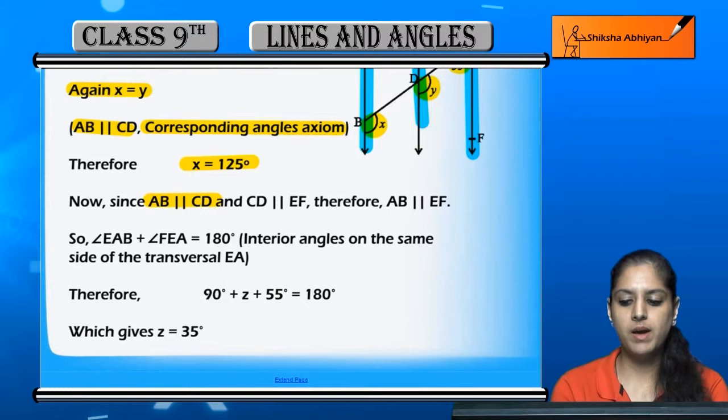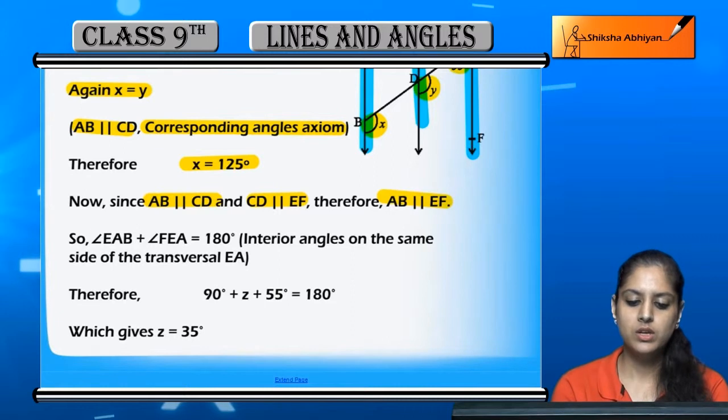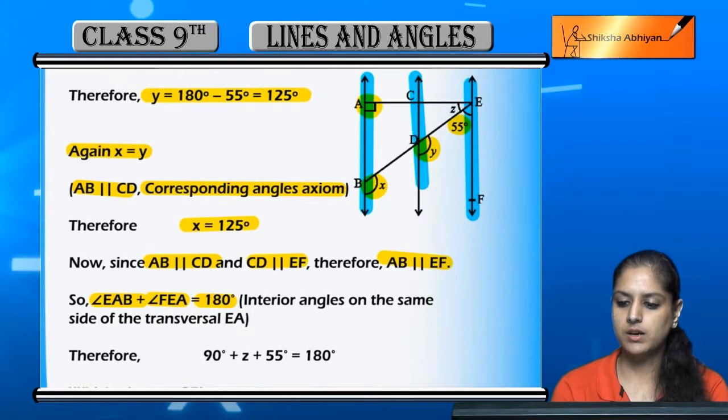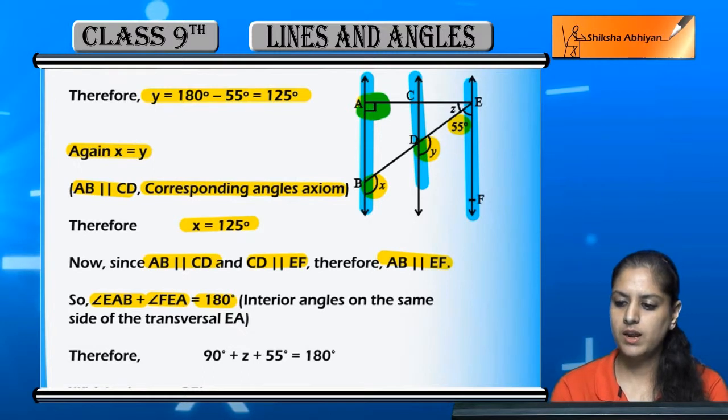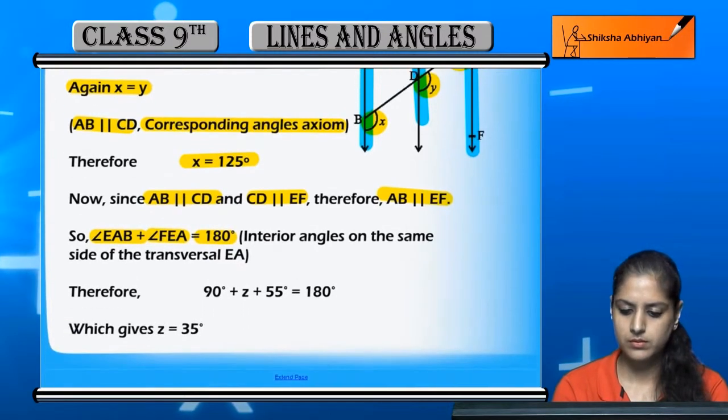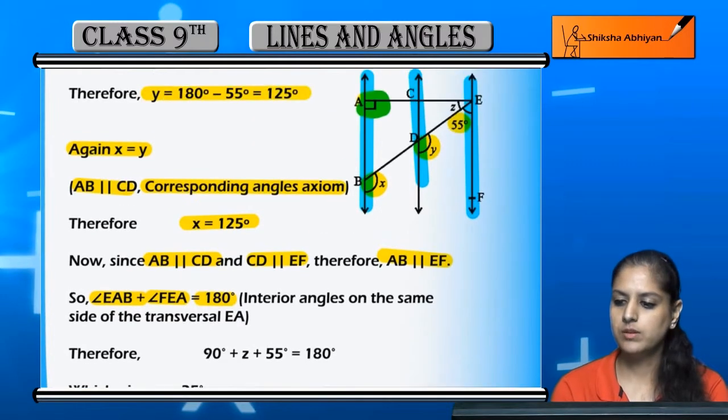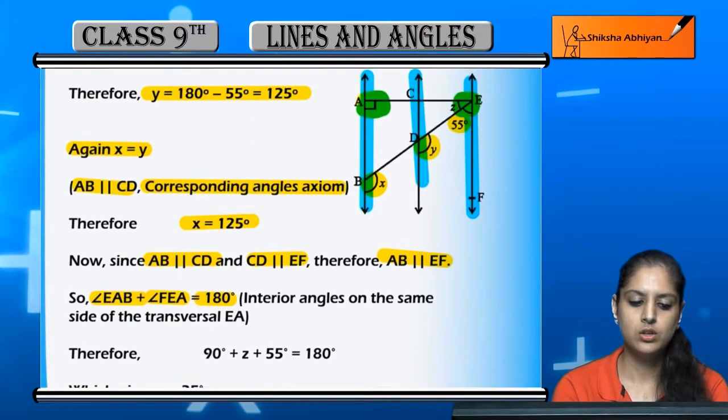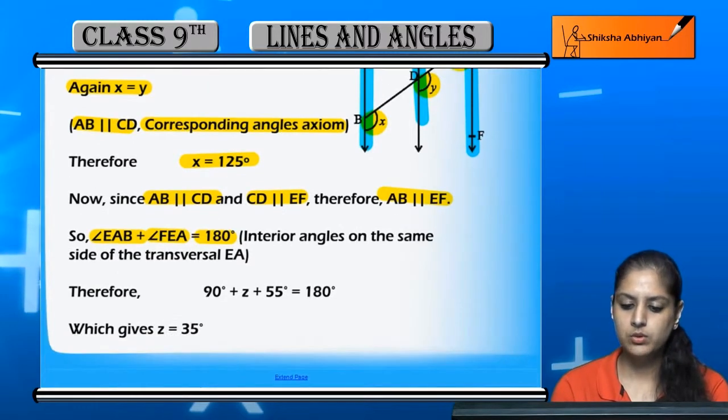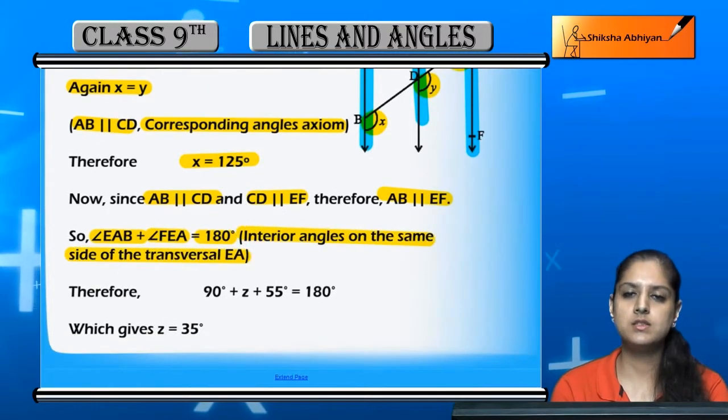Now, since AB is parallel to CD and CD is parallel to EF, therefore AB is parallel to EF. So angle EAB plus angle FEA equals 180 degrees because these are interior angles on the same side of the transversal EA.